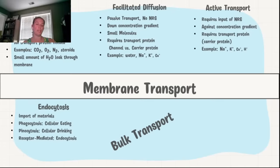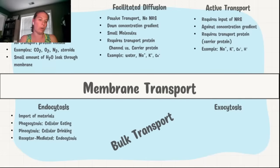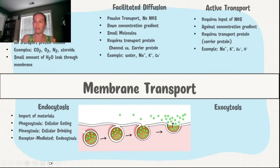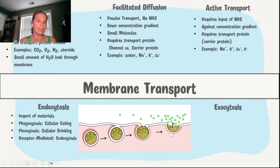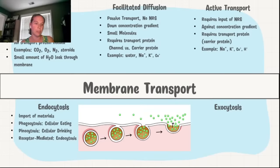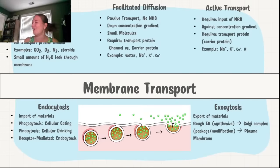The other type of bulk transport is exocytosis — things exiting the cell. A vesicle moves close to the membrane until it fuses, the molecules vibrate past each other, opening it up and releasing whatever was inside the vesicle. Exocytosis does require ATP — it is an active transport process. This is usually what happens with the rough ER pathway: synthesize protein in rough ER, it goes to the Golgi for packaging and modification, then a vesicle moves to the plasma membrane for exocytosis.